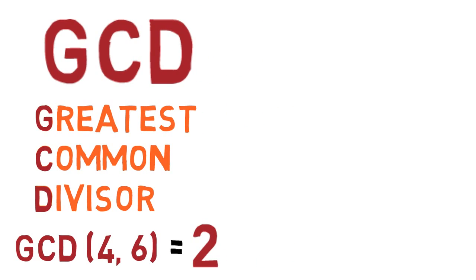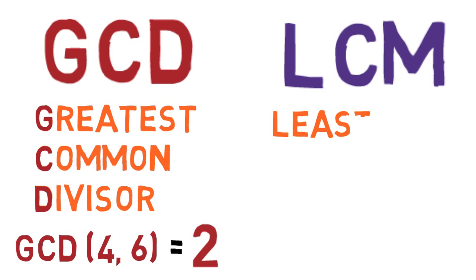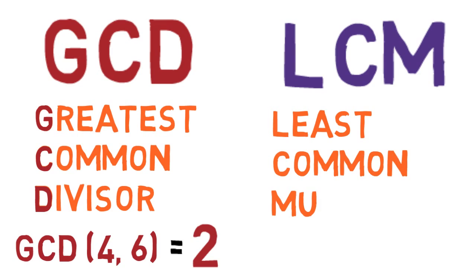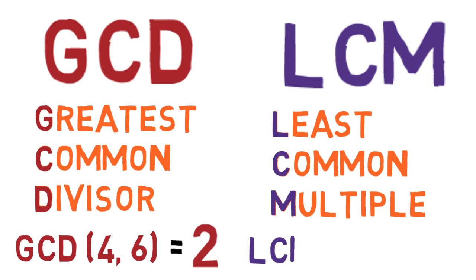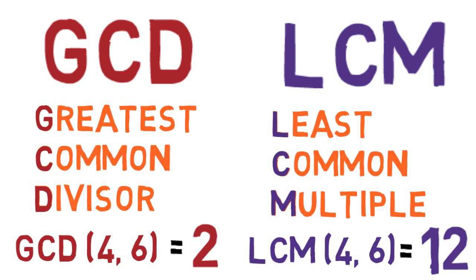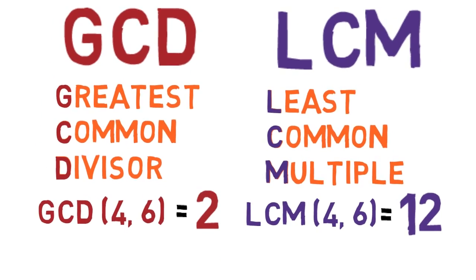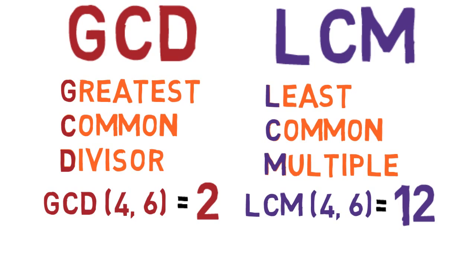In contrast, the LCM is the least common multiple. The LCM of 4 and 6 is 12, because 12 is the smallest number that's a multiple of both 4 and 6.